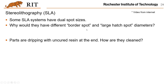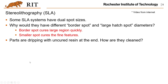The system has dual spot sizes: one broader spot and one smaller one. The broader spot cures larger areas quickly, while the smaller one cures fine features more slowly but with greater accuracy. By alternating between the two spot sizes, the system achieves a better combination of efficiency and accuracy.